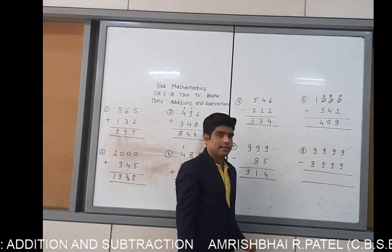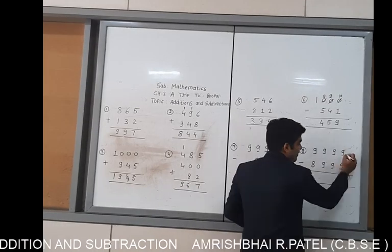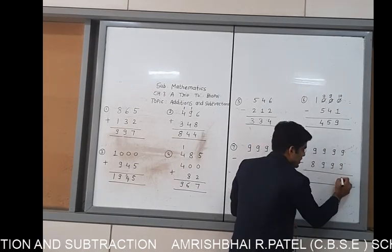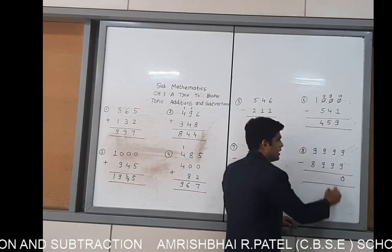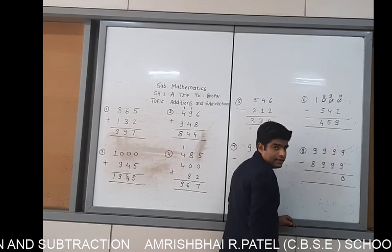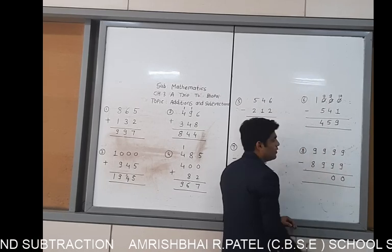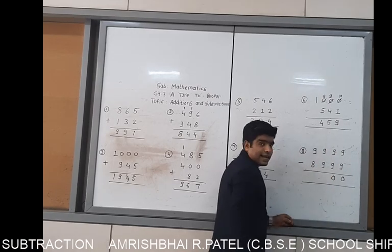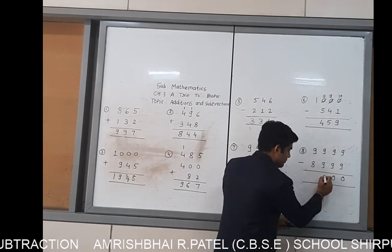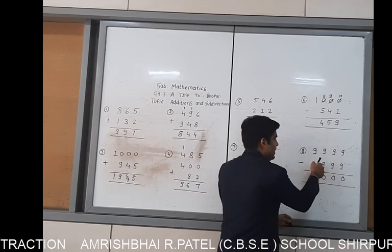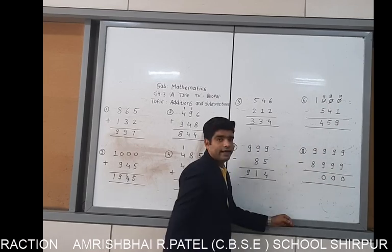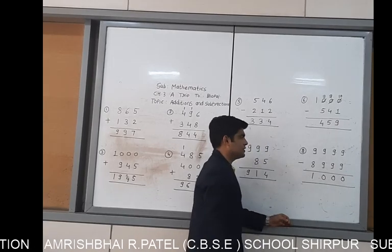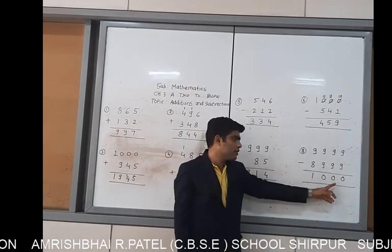This is our last example in this set. 9 minus 9 is 0. 9 minus 9 is also 0. 9 minus 9 is also 0. And 9 minus 8 is also 1. Your answer is 1001.